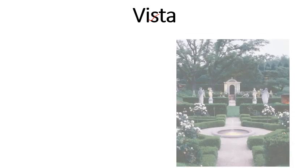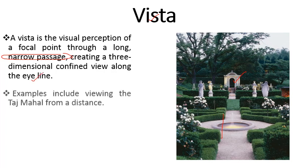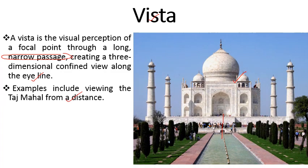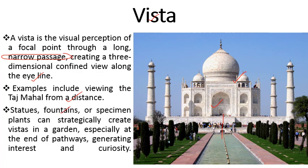Next comes vista. Vista means a visual perception of a focal point through a long, narrow passage — creating a three-dimensional confined view along the eye line. An example includes viewing the Taj Mahal from a distance, where all focus is on the building. Statues, fountains, or specimen plants can strategically create vistas in the garden, attracting attention especially at the end of pathways and generating interest and curiosity.